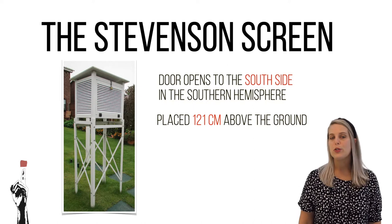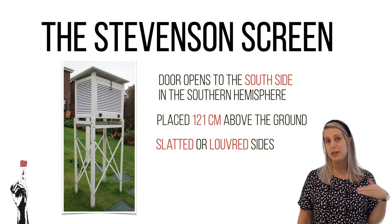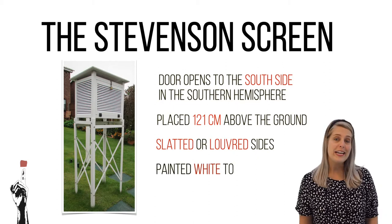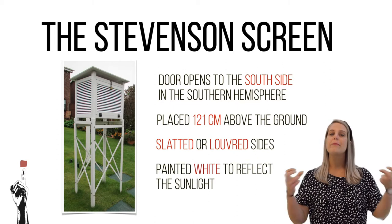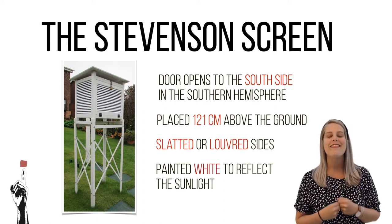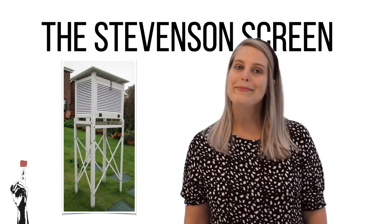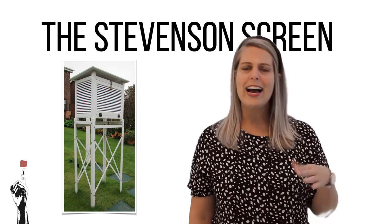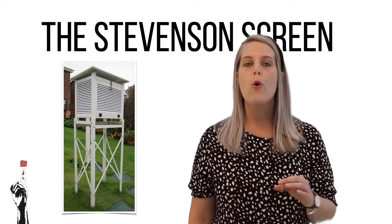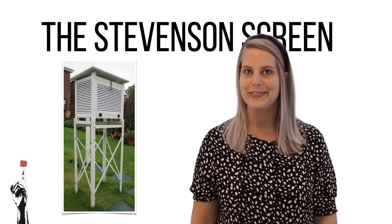The Stevenson screen also has slatted or louvred sides and this allows wind to pass through. It is painted white so that it does not absorb heat, because if it absorbs heat then an unrealistic temperature is given. For these reasons you can see that the design, the color, and the materials used all have a very important function in making this box successful.